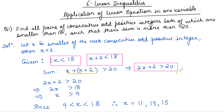We need to find the value of x. Solving 2x plus 2 greater than 20, we subtract 2 from both sides of the inequality, giving x is greater than 9. And from the given condition, x should be less than 18. So x is lying between 9 and 18.